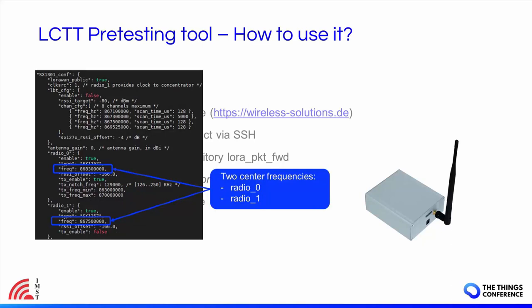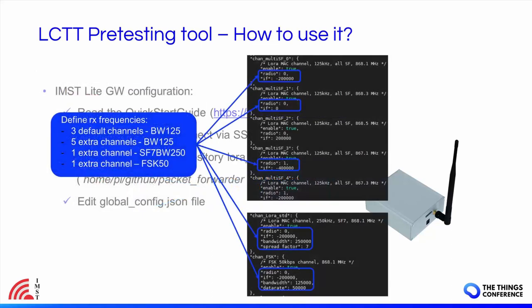Finally, configure the different reception channels on the gateway. These will be based on two center frequencies and eight different channels with bandwidth 125. One additional channel on bandwidth 250 — for example for SF7 — and one additional FSK channel can be configured. These settings must include at least the default channels for the selected region as defined in the Regional Parameters document. In this demo, a test run for Europe will be shown.